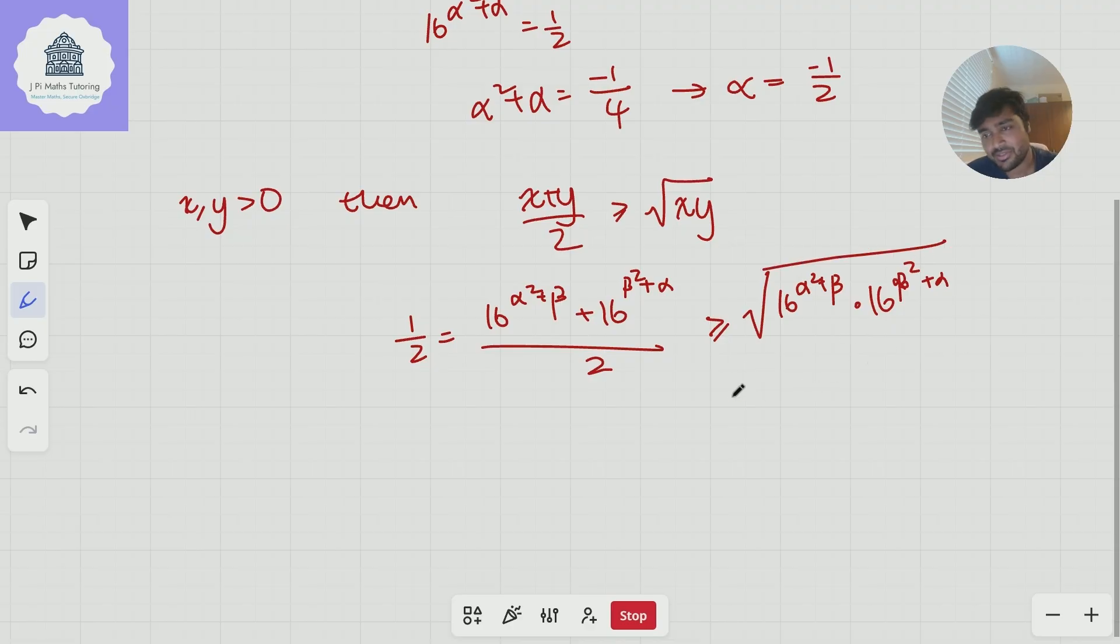But now, just using rules, this is the same as 16^(α²+α+β²+β), and I can write 16 as 4². And so this is going to be 4 to this power. But now I'm just going to complete the square on this. It's going to be 4^((α+1/2)² + (β+1/2)² - 1/4 - 1/4), so minus a half.